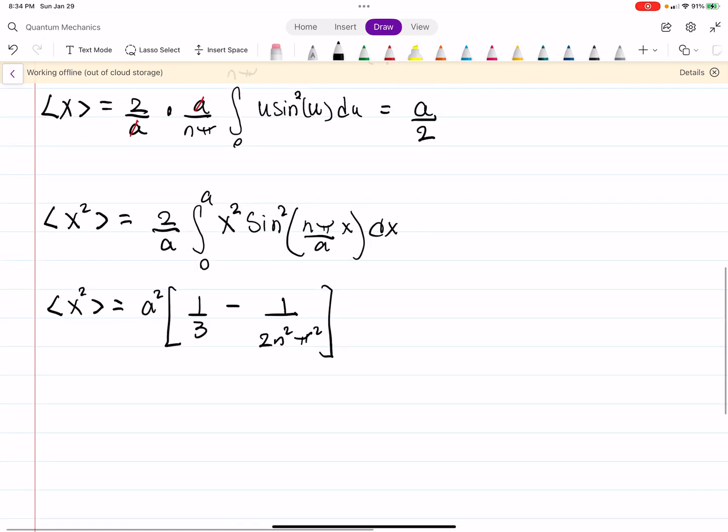Now, to find the expectation value of momentum, that's actually a little easier because we have that trick that we showed in a previous problem. That's just m times the derivative of your expectation value of x with respect to t. Well, there's no t dependence here, so this is just 0.